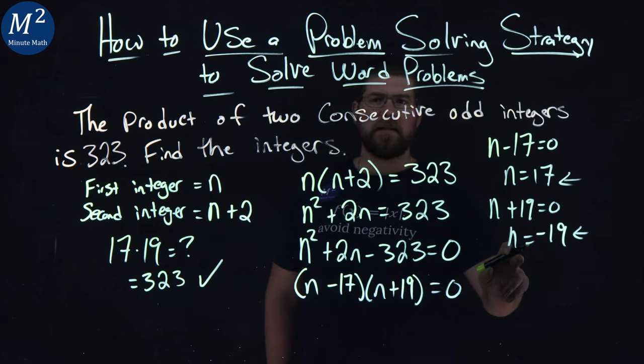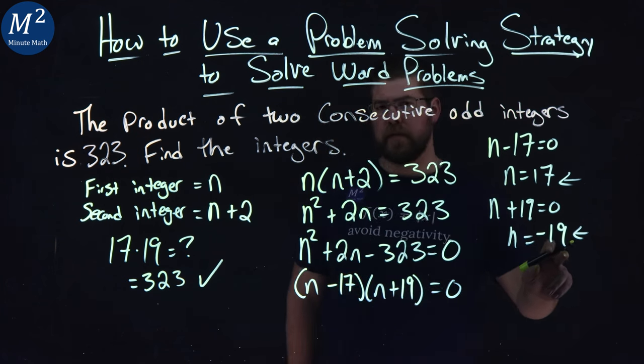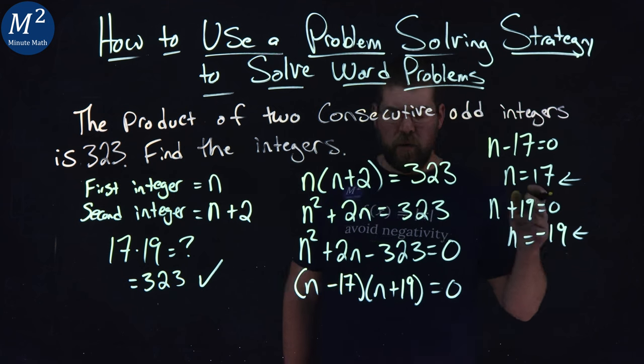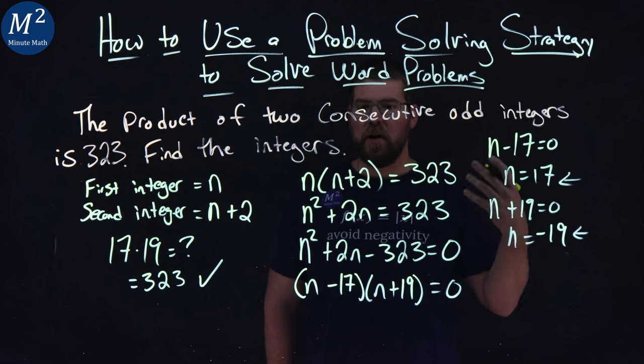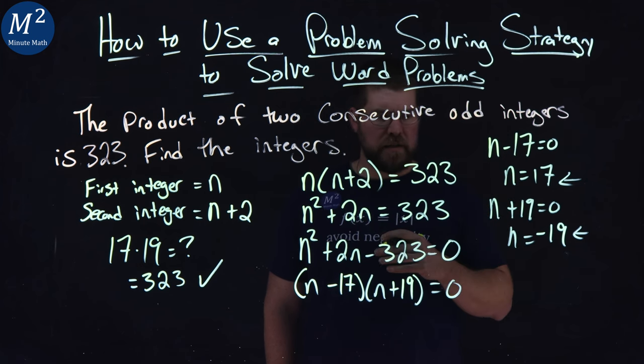Now what about the second one? n is equal to negative 19. Well, if I put negative 19 here, the next consecutive odd integer would be negative 17, right?